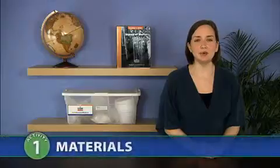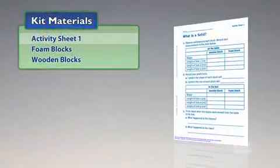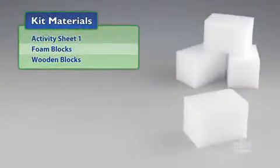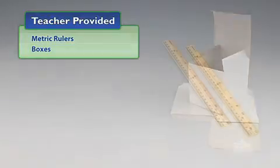You will need the following materials from the kit: Activity Sheet 1, 8 foam blocks, and 8 wooden blocks. You will also need to provide the following items: metric rulers and boxes.